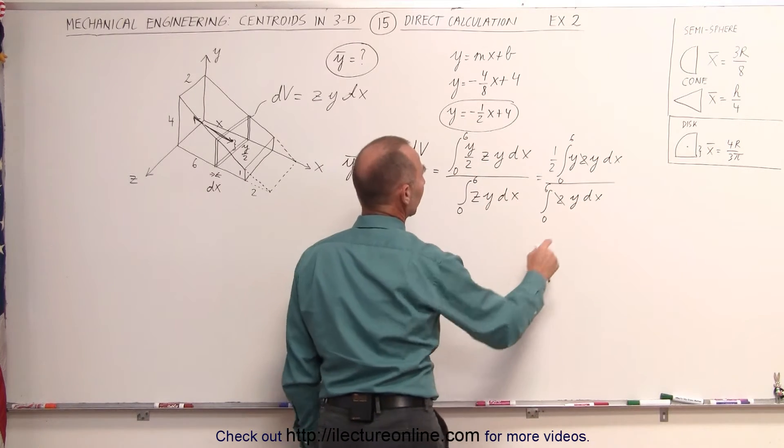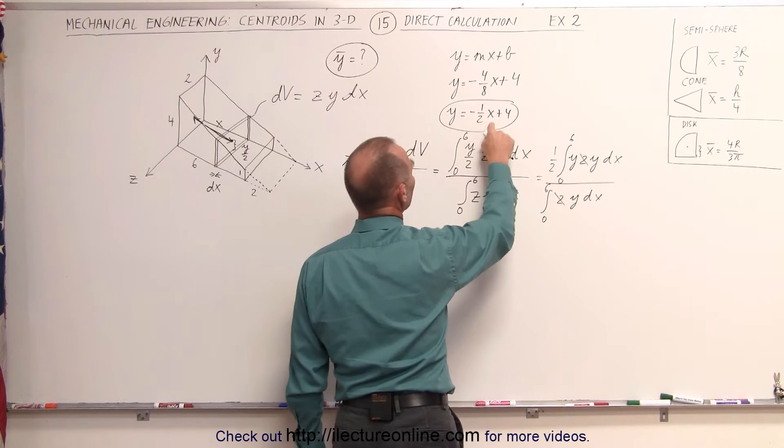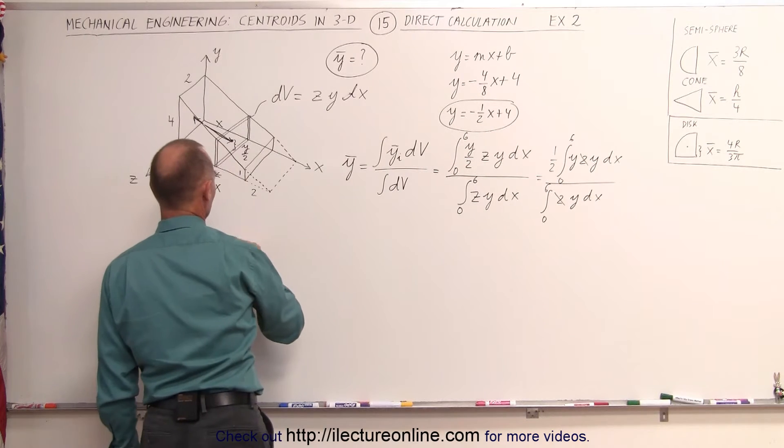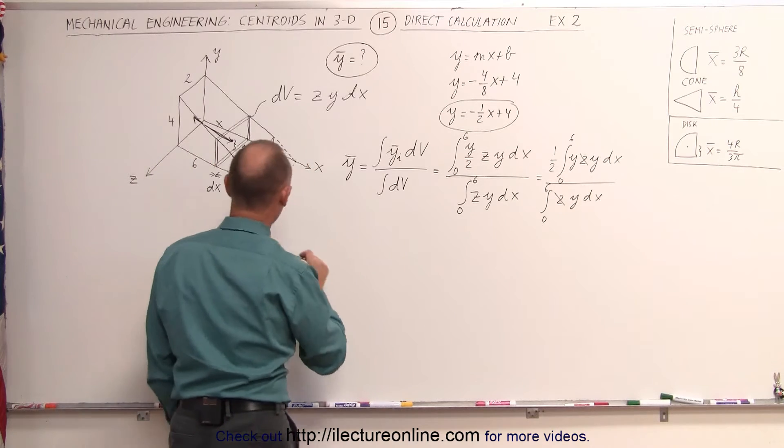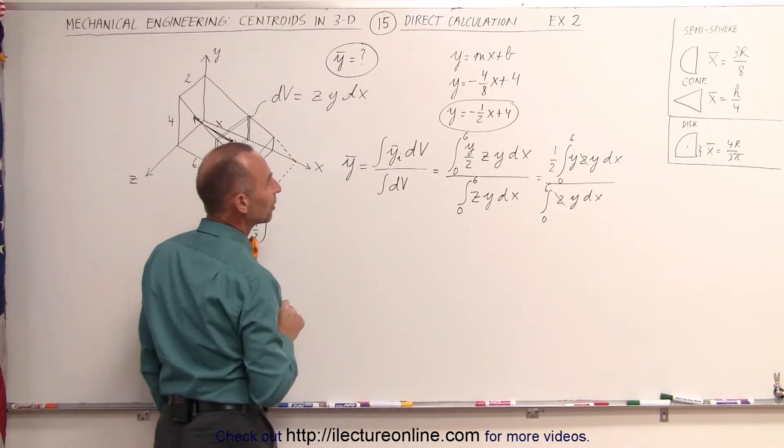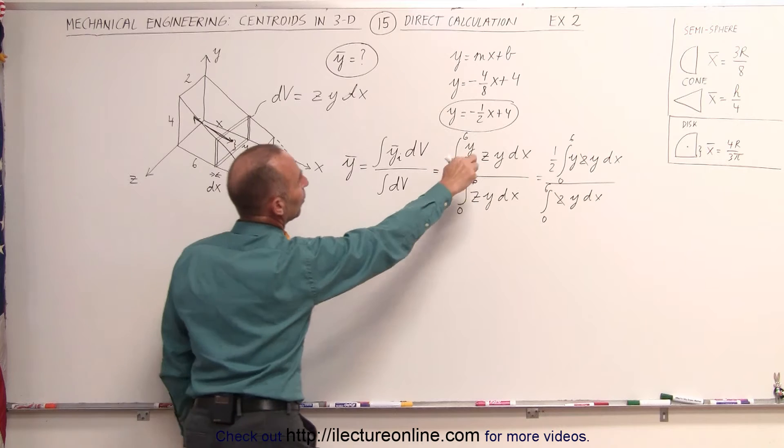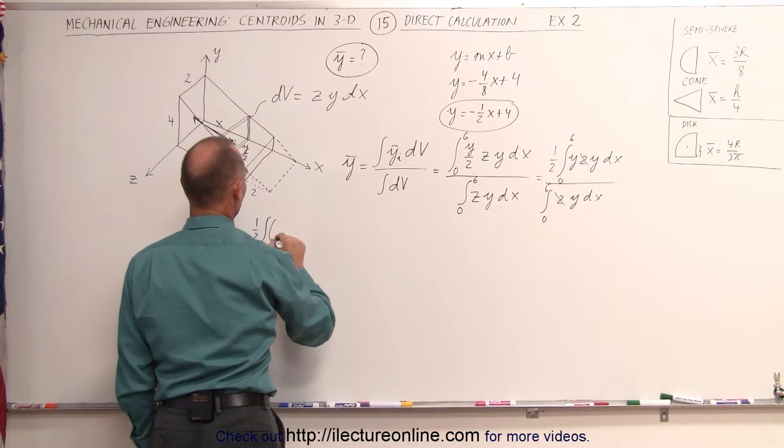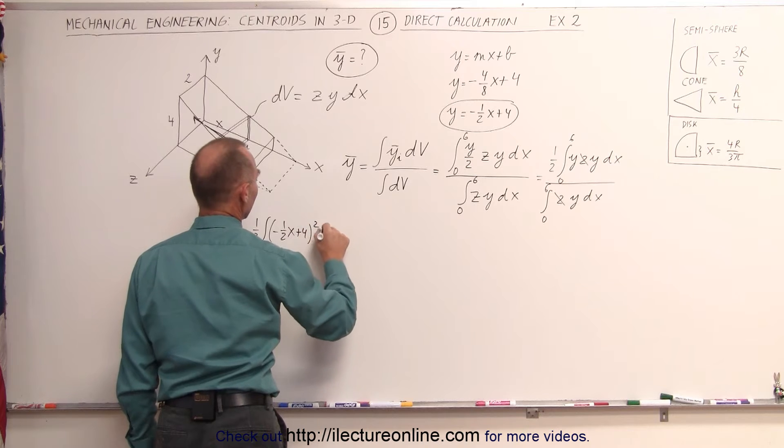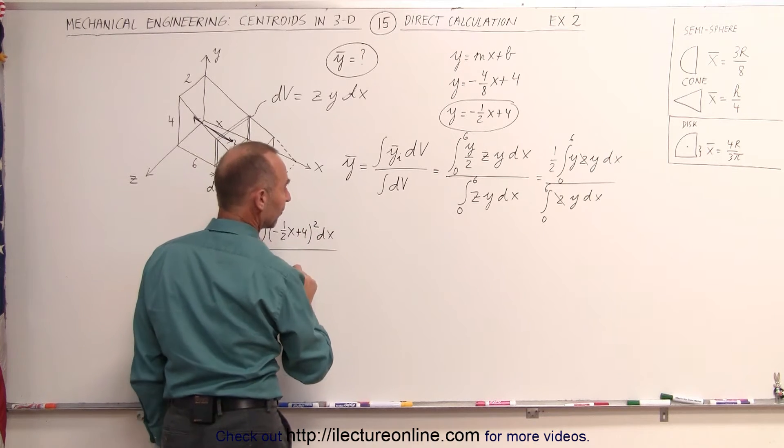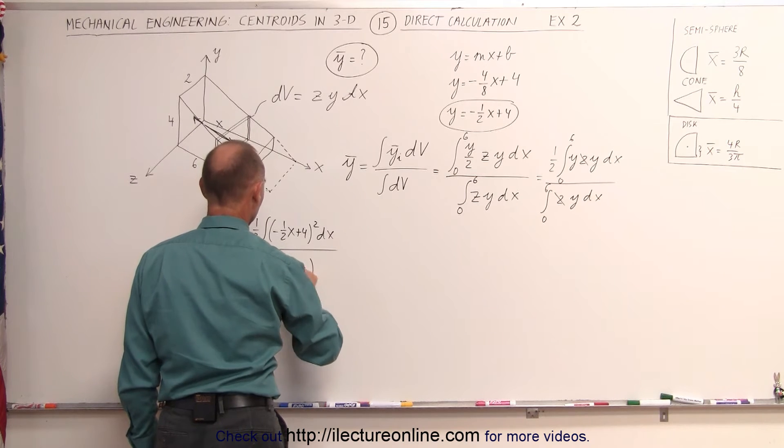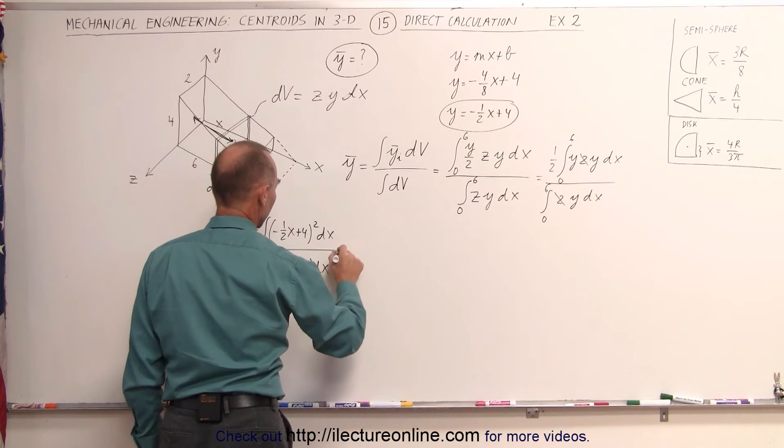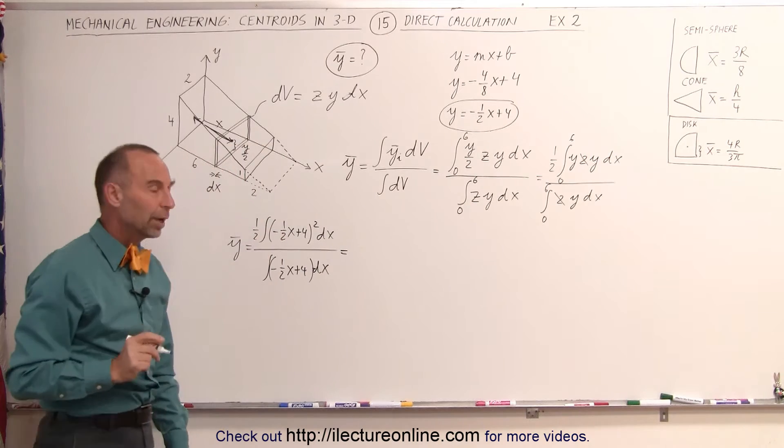And all I have to do is convert from y to what y is equal to in terms of x. The y-coordinate of the centroid is equal to the integral of one-half, I can put the one-half in the front of the integral sign, y squared, that would be this quantity squared, minus one-half x plus 4 quantity squared times dx. In the denominator, I have an integral of minus one-half x plus 4 times dx. That means I have to square the numerator.